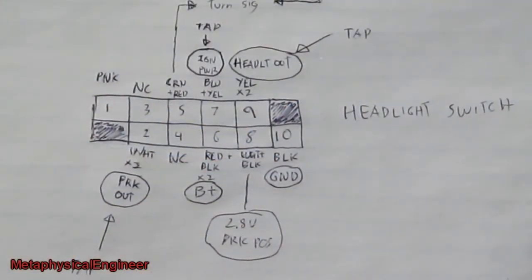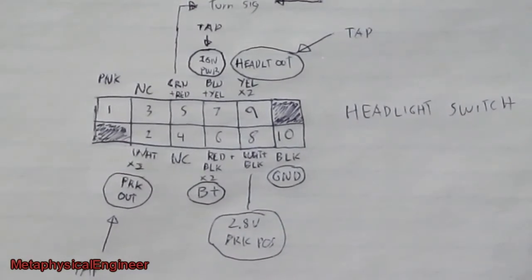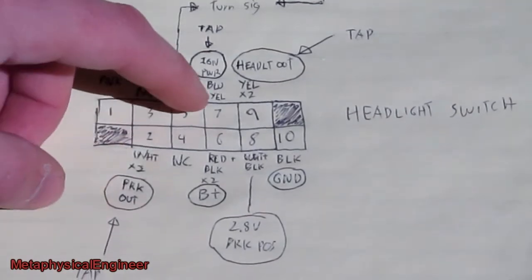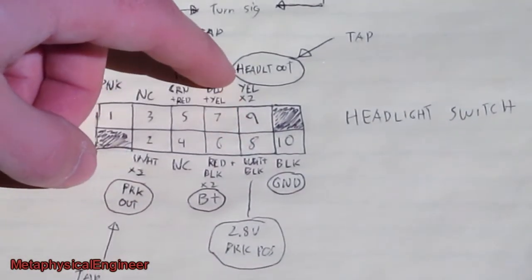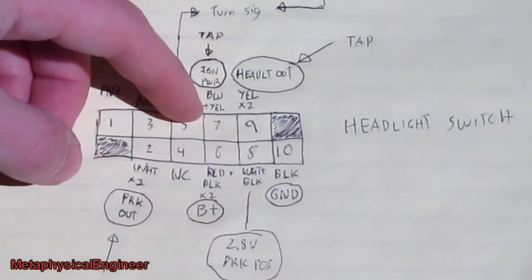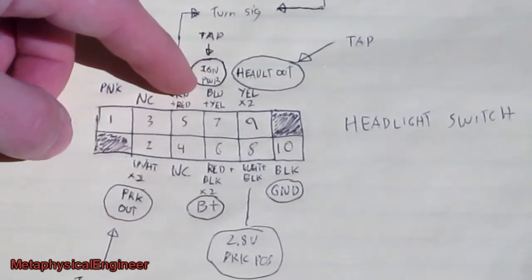I've back probed the headlight switch and figured out what wires I need to tap into. Position two, dual white wire, that's parking lights. Position nine, dual yellow wire, that's the headlights, and position seven, single blue wire with a yellow stripe, that is ignition switched power.